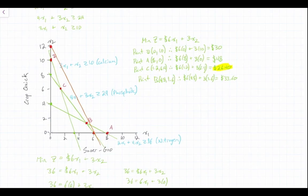And once our objective line is plotted, so this is our objective function. So this is min Z equals 6x1 plus 3x2.